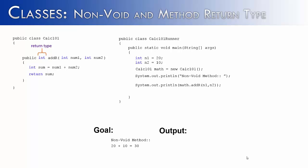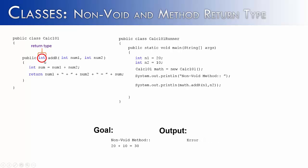Let's say I wanted to get the output '20 plus 10 equals 30' using math.addR without having to put n1 plus n2 in front of it. Right now the method would just return 30. In order to get that formatted output, we're going to have to create a string that contains all of this information. In the return statement, I say num1 plus a concatenated plus sign, num2 plus equal sign, then sum. But if I try to run this now, I'd get an error because I didn't change the return type — it used to be an integer, but now it's returning a string.